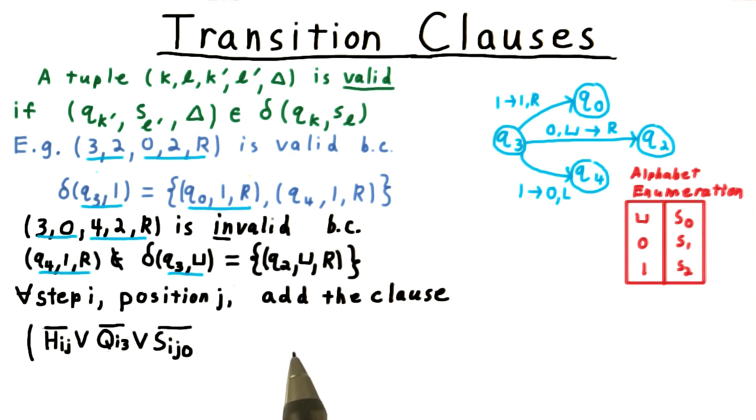To illustrate, in order to make sure that this invalid transition is never followed, for every step i and position j, we add a clause that looks like this. It starts with three literals that ensure the transition rules for being in state q3, and reading a blank symbol, actually do apply.